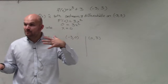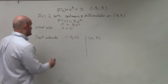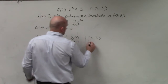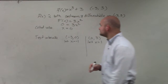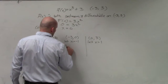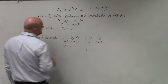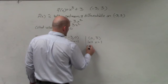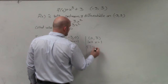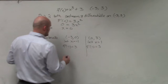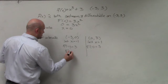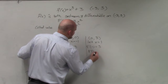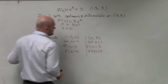Now I need to determine what's happening in between all those intervals. So I'll let x equal negative 1 and let x equal positive 1. We can say that f prime of negative 1 is going to equal 3, and f prime of positive 1 is also going to equal 3. So f prime of x is greater than 0 on both intervals.